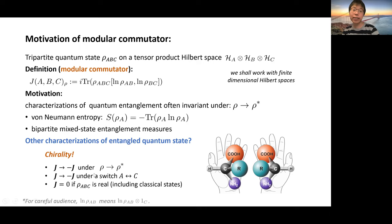However, this quantity J(A,B,C) modular commutator does seem to characterize some sort of chirality for tripartite quantum states. This is because J is odd under ρ to ρ*, which is kind of like the reversal of time direction. And J flips sign under the switch of A and C, which is kind of an abstract version of the space reflection. Furthermore, J is zero if ρ_ABC is real, which includes all the classical states, meaning that if J is non-zero, it's a quantum property of the quantum state.